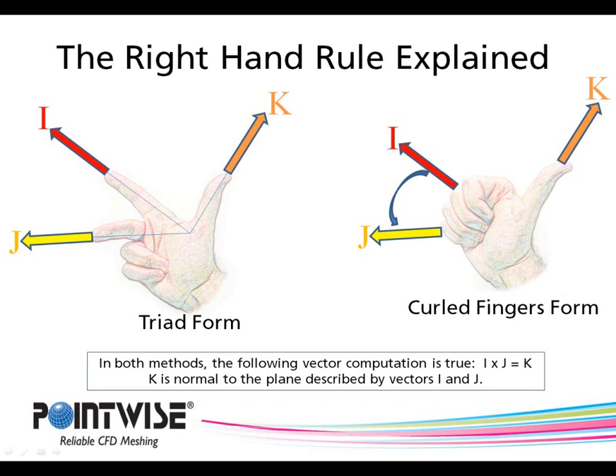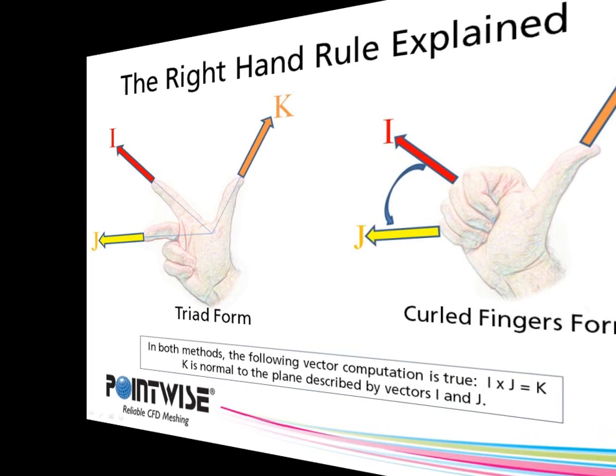The fact that the k direction is normal to both the i and j direction is why we sometimes call it the normal vector. Now, there is one more method for using the right-hand for direction orientation purposes. I call this the curled fingers technique. Point all of your fingers in the positive i direction and curl them towards the positive j direction. Your thumb will then point in the positive k direction.